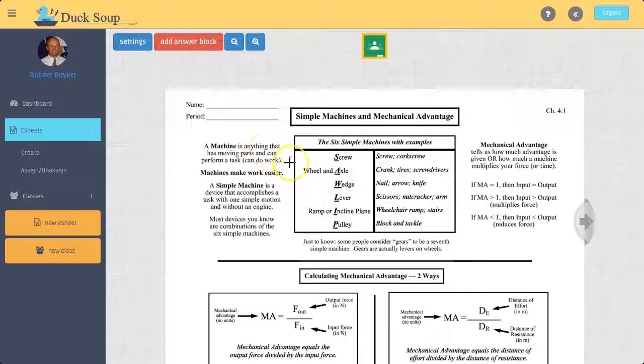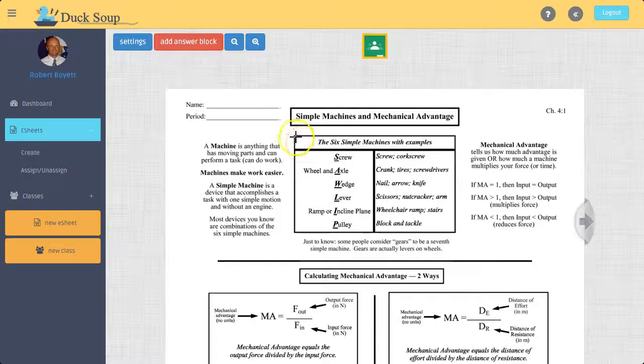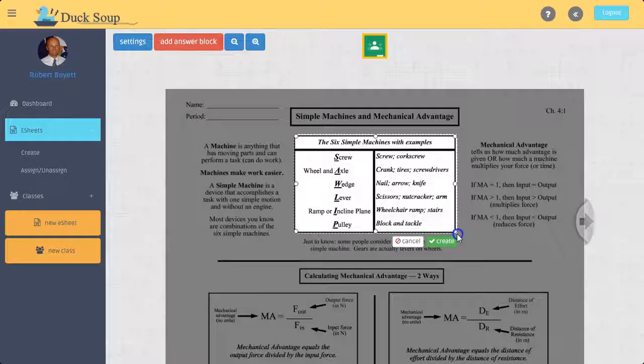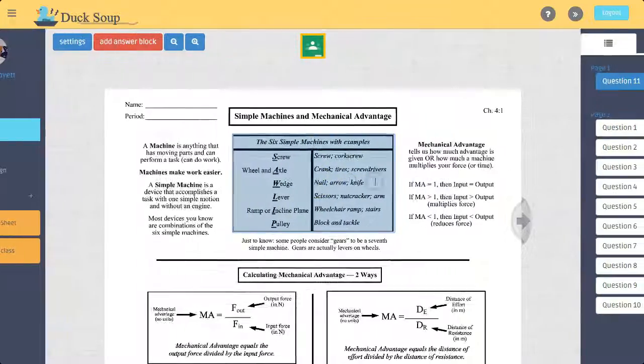So whatever part of the paper that I want them to be able to write on, let's say I wanted them to be able to write on this area, maybe to, like you were saying, just mark out things. So I just create a box over the area I want them to write in.